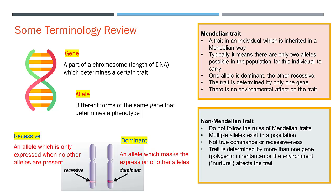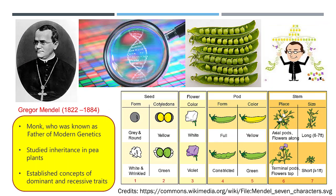Within the broader scope of how we describe traits, they are categorized into Mendelian and non-Mendelian traits. For Mendelian traits, we see dominant or recessive expression which is not influenced by the environment. For non-Mendelian traits, multiple alleles exist in the population with no true dominance or recessiveness, and environment or polygenic factors might play a greater role. Let's look at the scientist who discovered these Mendelian traits of transmission: Gregor Mendel, a monk who studied inheritance in pea plants, first observed seven major traits.